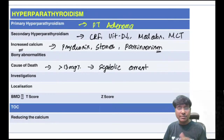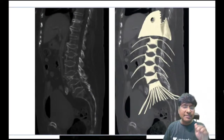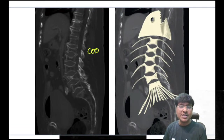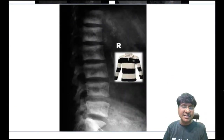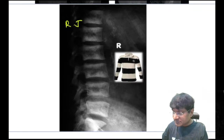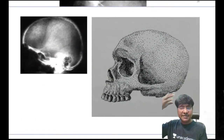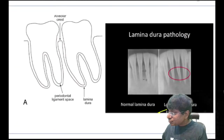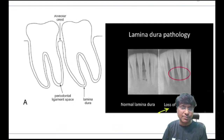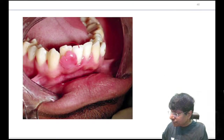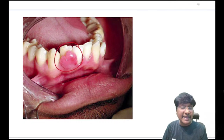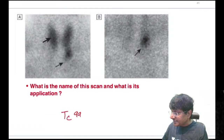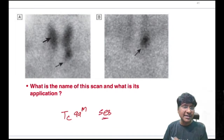Bony abnormalities in hyperparathyroidism from increased bone resorption: codfish spine (vertebra resembling codfish), rugger jersey spine, and pinhead stippling of skull. There is also loss of lamina dura due to demineralization. An epulis tumor develops in the oral cavity. For localizing parathyroid adenoma, use technetium-99m sestamibi scan.